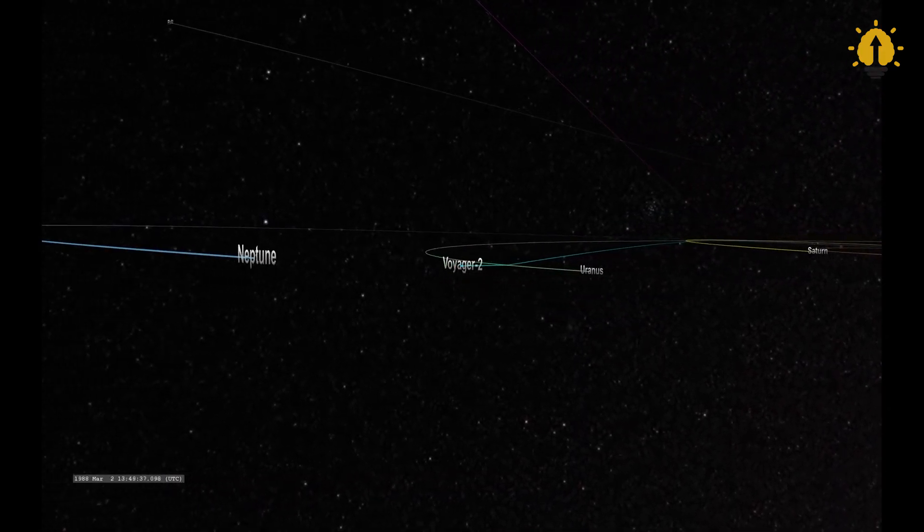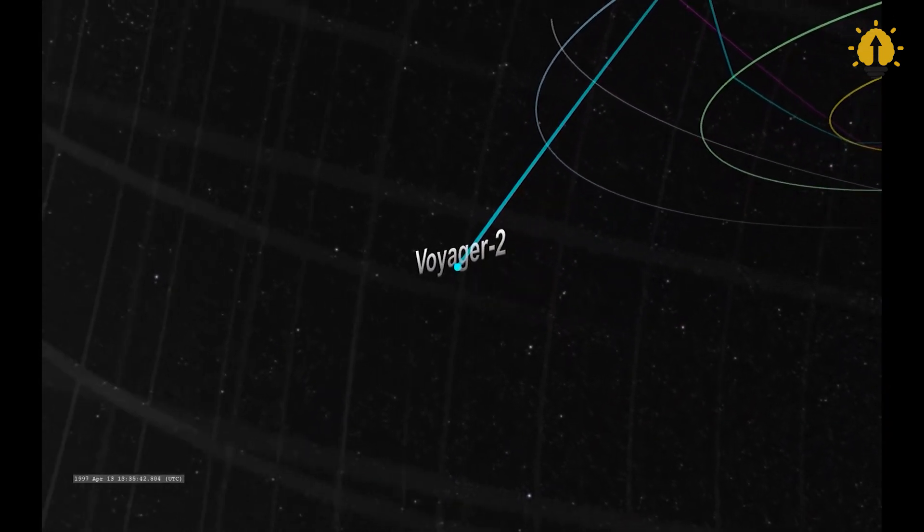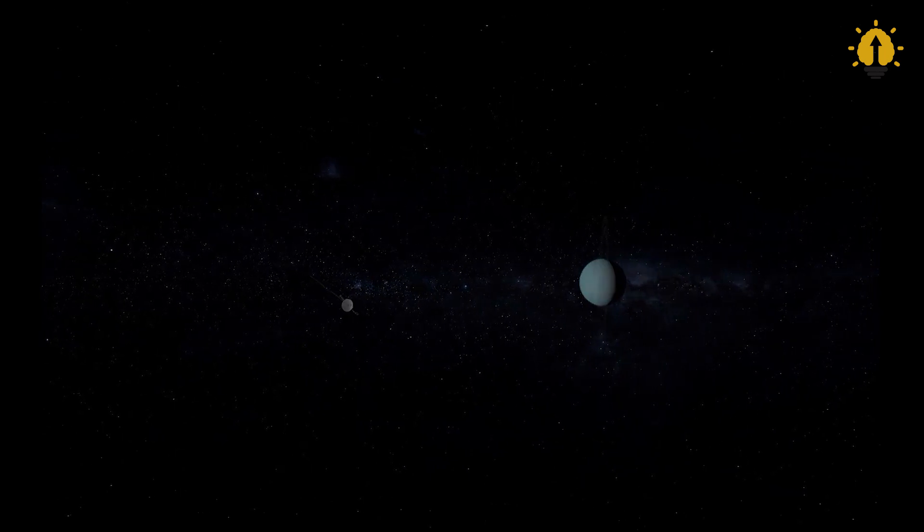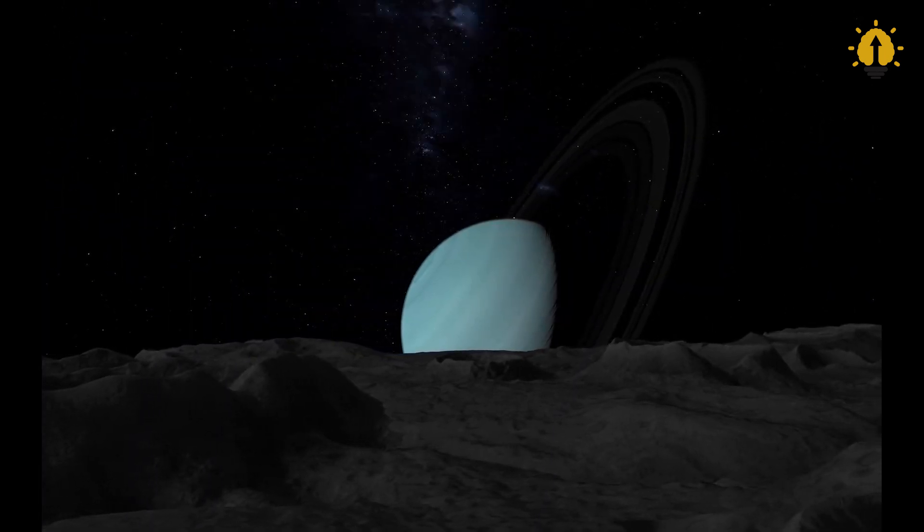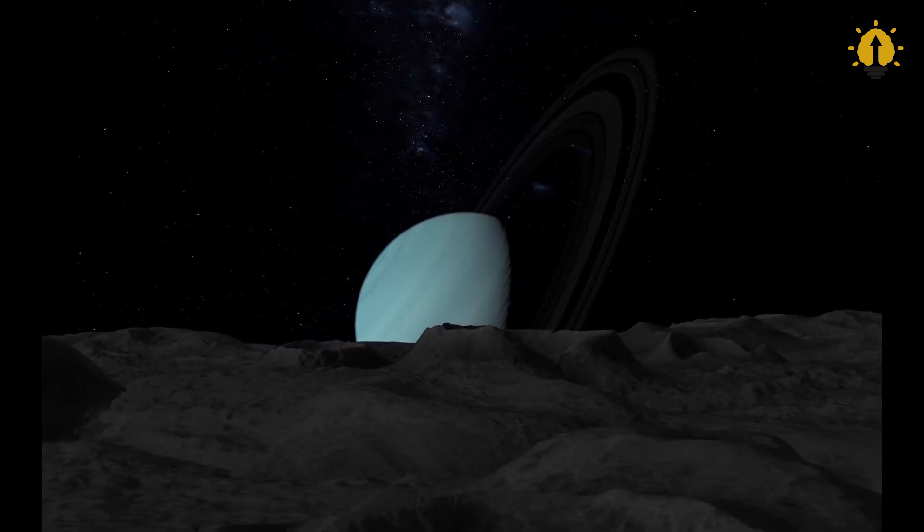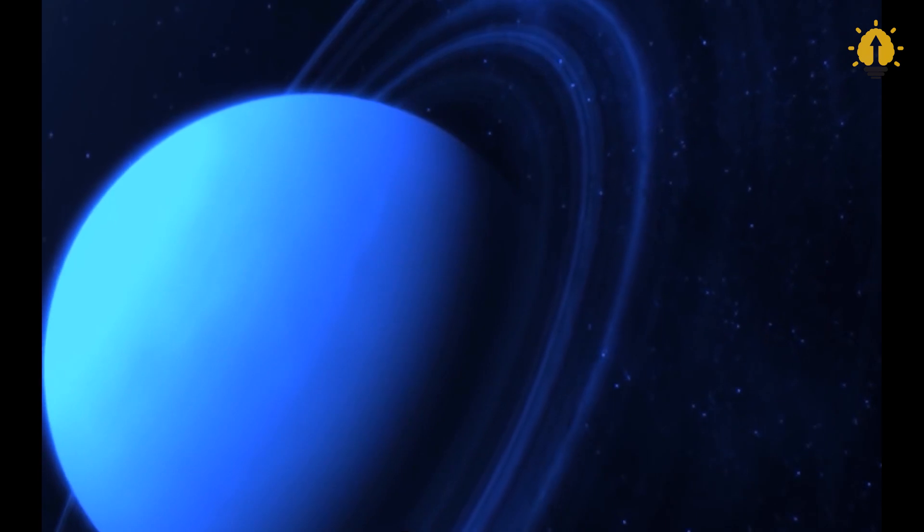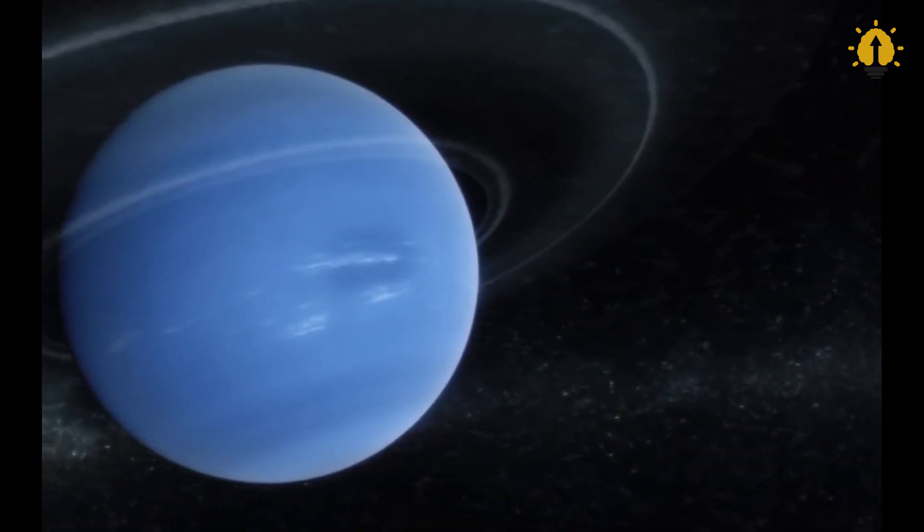Voyager 2, on the other hand, embarked on a series of adventures that brought it to the outermost planets of the solar system. In 1986, it made a historic flyby of Uranus, where it discovered 10 previously unknown moons, increasing the planet's moon count. Three years later, Voyager 2 reached Neptune, revealing the remarkable features of this distant ice giant.